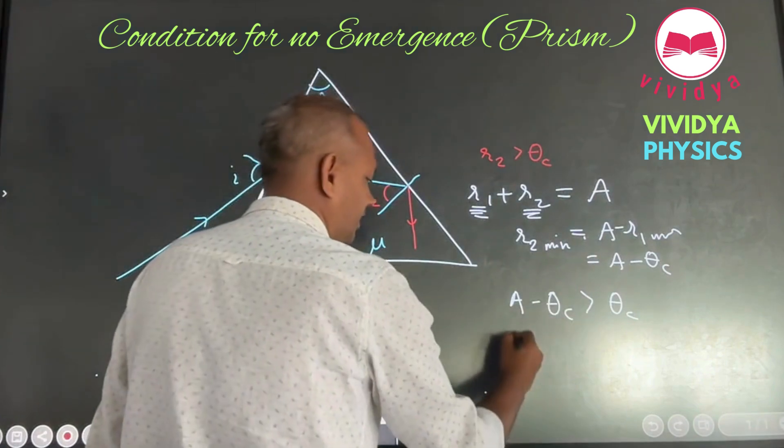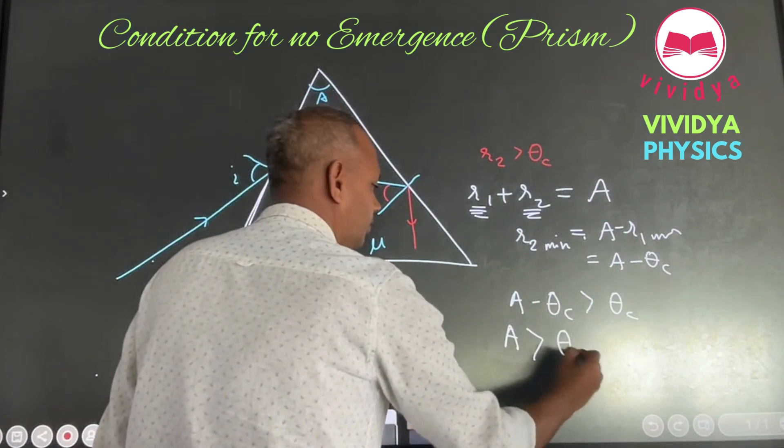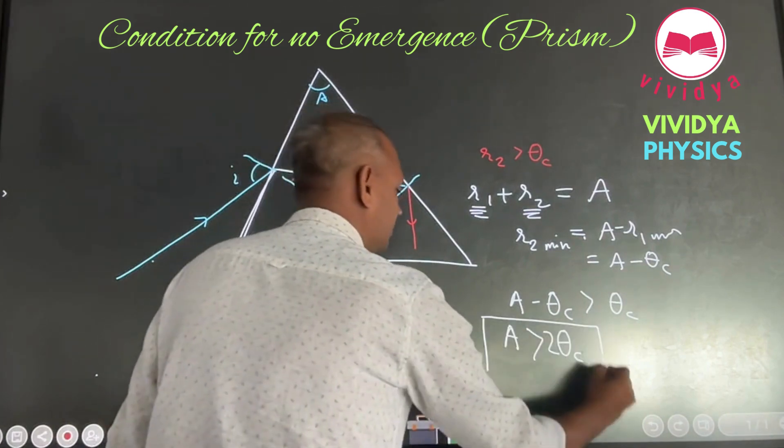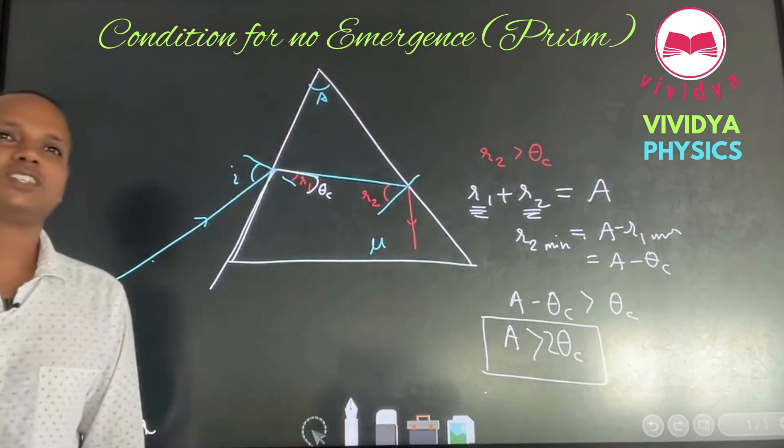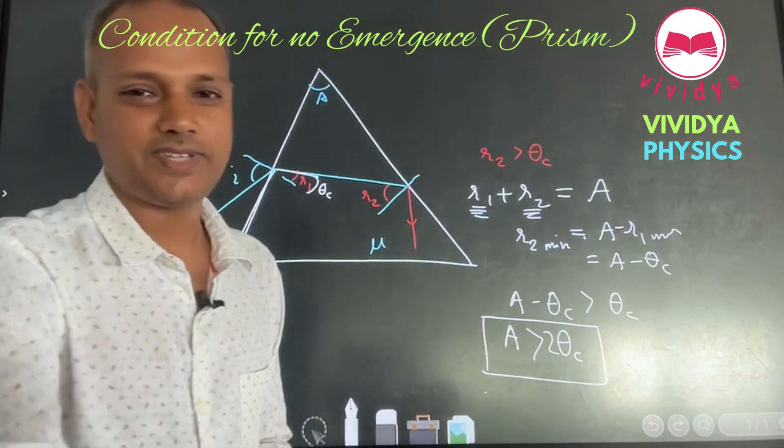What is the condition you are getting? A greater than 2 theta C. This is the condition I asked. We all recognize. Okay? All right. Thank you.